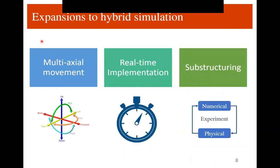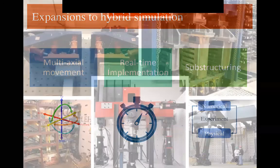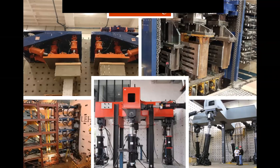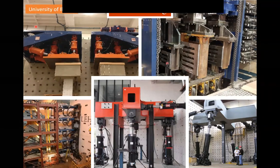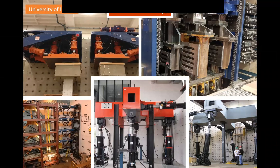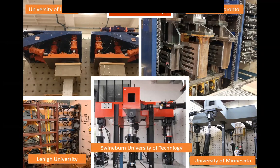Over the years, a number of expansions have been added to hybrid simulation, including multi-axial capabilities for capturing three-dimensional material envelopes, real-time implementation for capturing dynamic and rate-dependent behavior, and different discussions on substructuring with more than one physical-to-numerical interface. Very sophisticated actuated systems have been developed, including the Load and Boundary Condition Boxes at the University of Illinois, the UT10 hybrid tester at the University of Toronto, the multi-story test bed at Lehigh, and multi-access sub-assemblage testing facilities at the University of Minnesota and Swinburne University of Technology in Australia.